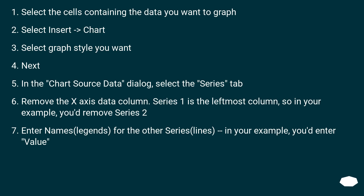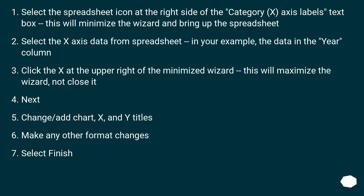Enter names and legends for the other series lines — in your example, you'd enter 'value'. Select the spreadsheet icon at the right side of the Category X Axis Labels text box; this will minimize the wizard and bring up the spreadsheet. Select the x-axis data from the spreadsheet — in your example, the data in the Year column. Click the X at the upper right of the minimized wizard; this will maximize the wizard, not close it.